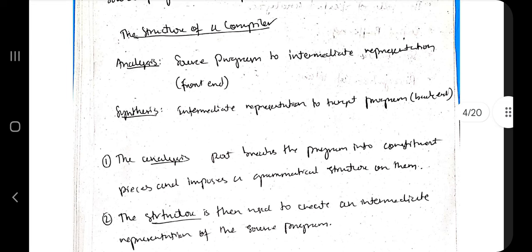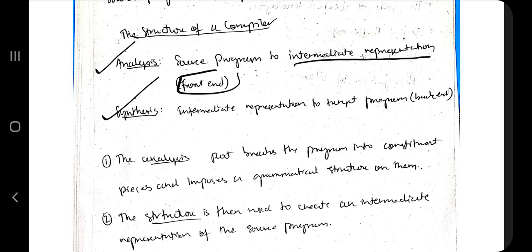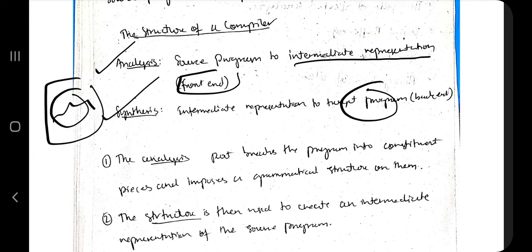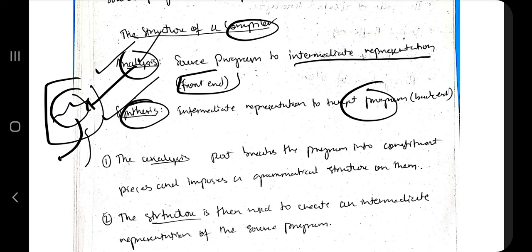The structure of the compiler is divided into two parts: the analysis part and the synthesis part. The analysis part produces an intermediate representation — it is the front end — and the synthesis part creates the target program. Think of it like a picture of a mountain: what you see at the front is analysis, and what went into making it behind the scenes is synthesis.